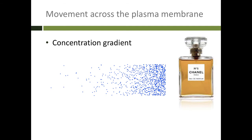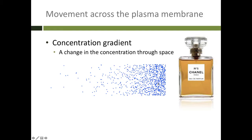Let's talk a little bit about gradients. Imagine I sprayed perfume — you and I are sitting in the same room. The perfume would smell very strongly near where I am and then be not as concentrated near where you are at first. But after a little while, those little molecules of perfume would start to move away from where I originally sprayed it, and you'd start to smell it. A concentration gradient is simply a change in the concentration through space — very strong over here, not very strong over there. That creates a gradient.